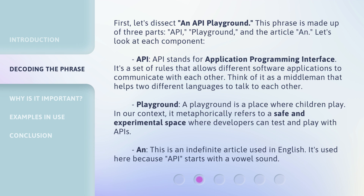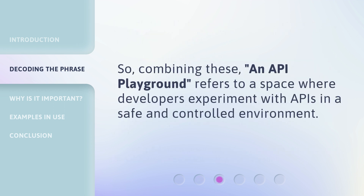Playground: a playground is a place where children play. In our context, it metaphorically refers to a safe and experimental space where developers can test and play with APIs. And "AN" is an indefinite article used in English. It's used here because "API" starts with a vowel sound. So, combining these, "an API Playground" refers to a space where developers experiment with APIs in a safe and controlled environment.